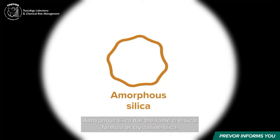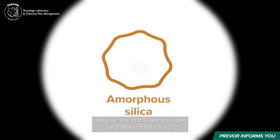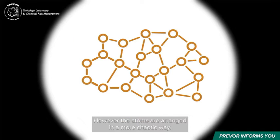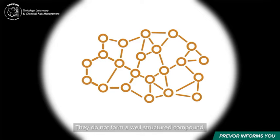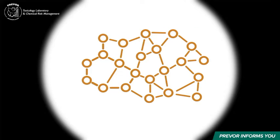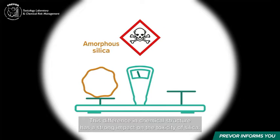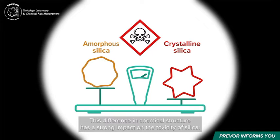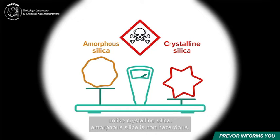Amorphous silica has the same chemical formula as crystalline silica. However, the atoms are arranged in a more chaotic way — they do not form a well-structured compound. This difference in chemical structure has a strong impact on the toxicity of silica. Unlike crystalline silica, amorphous silica is non-hazardous.